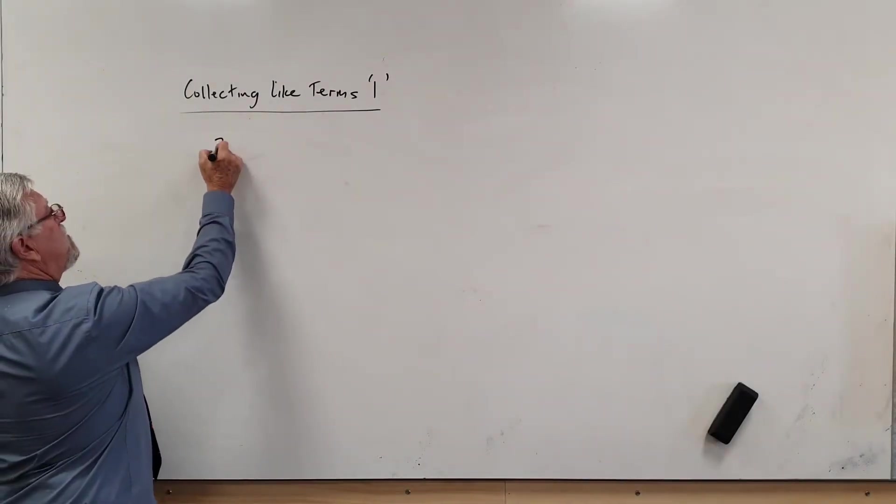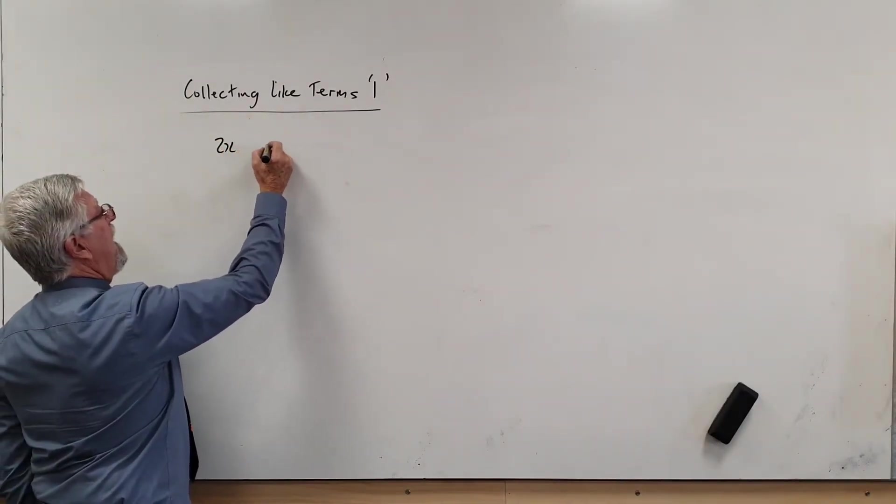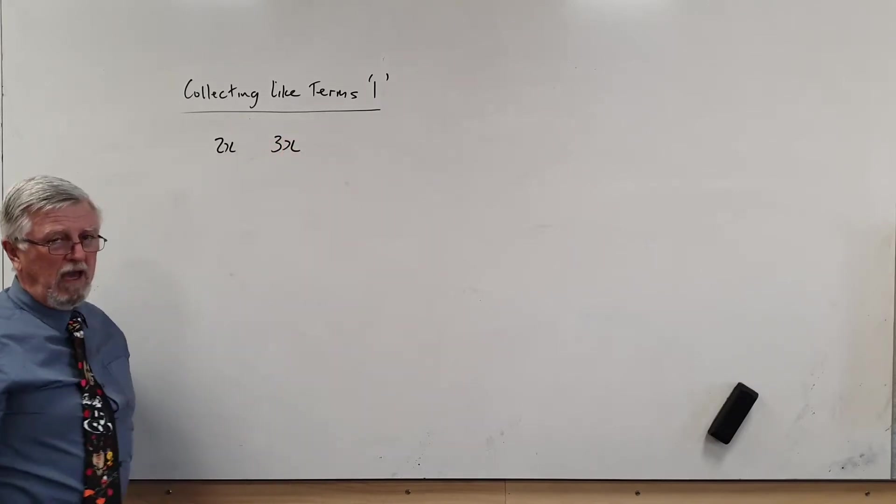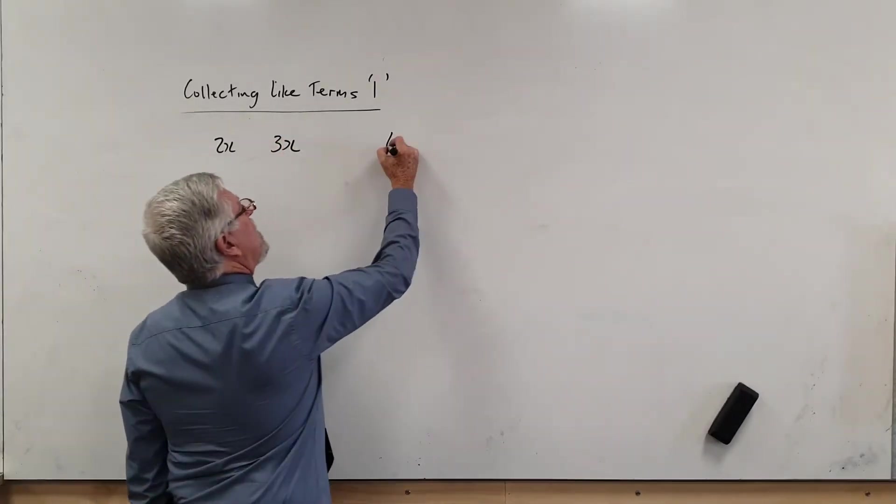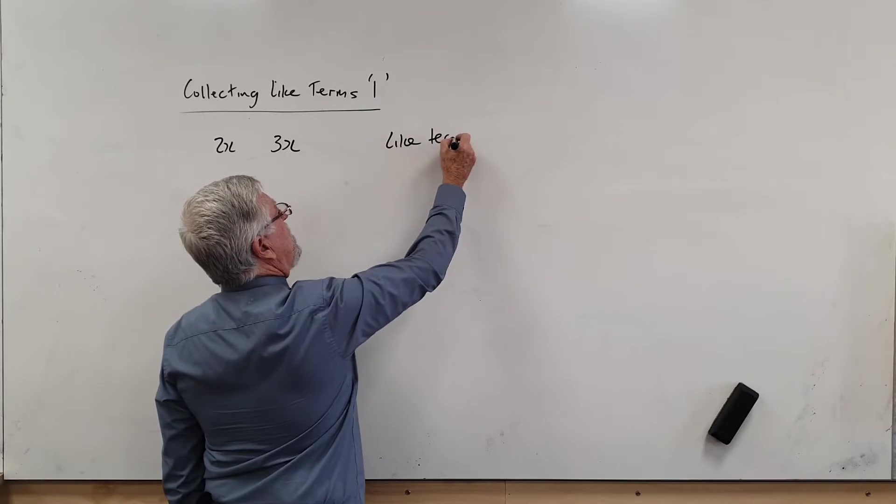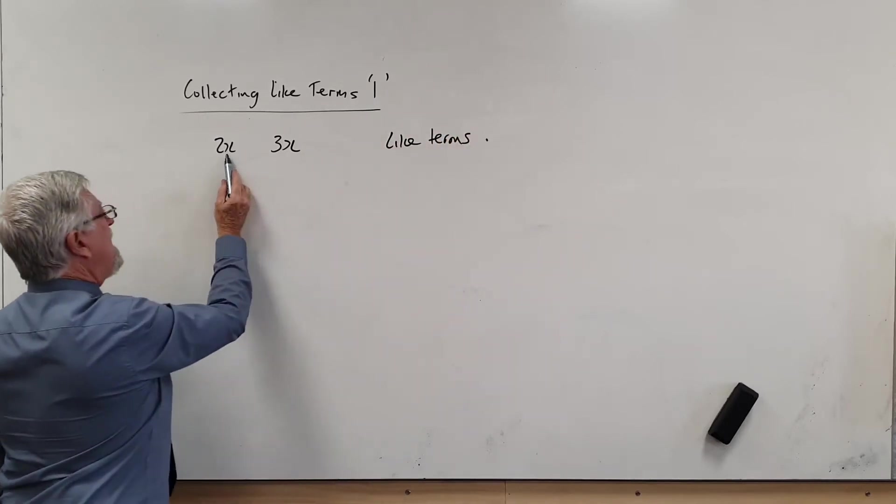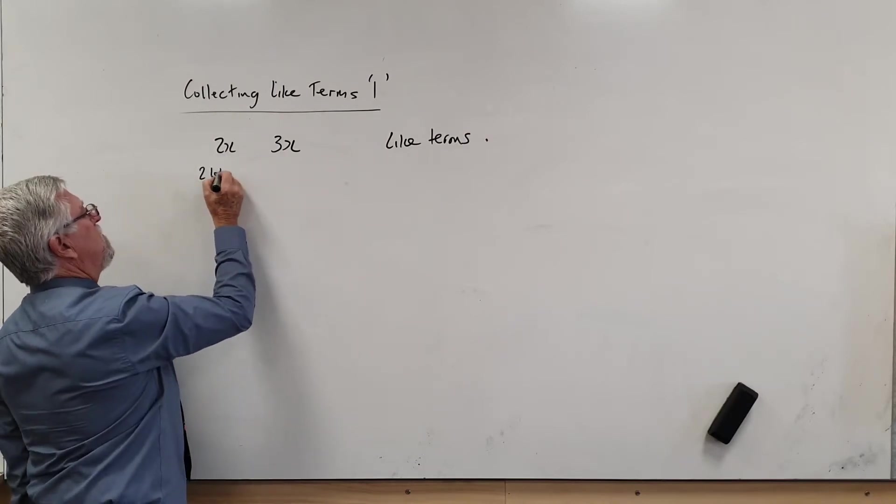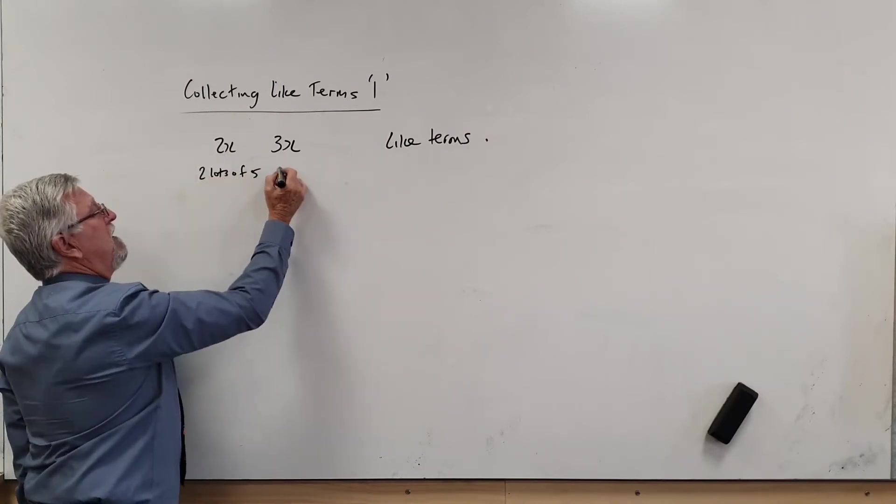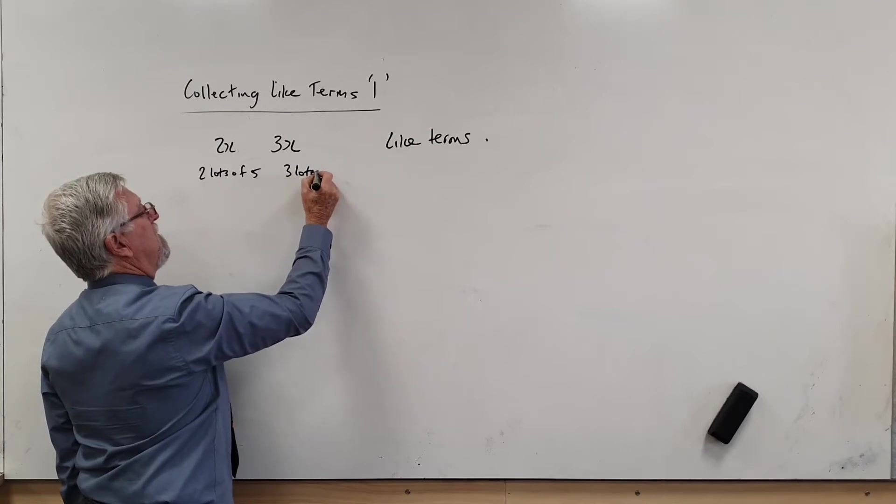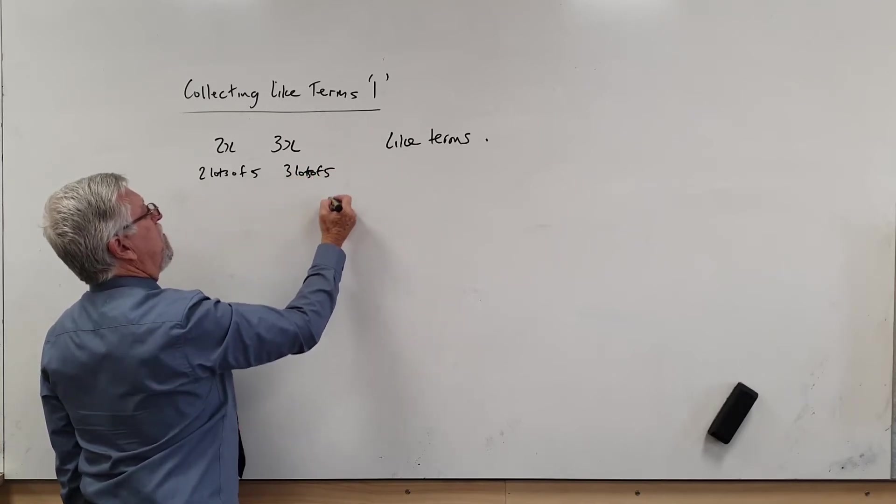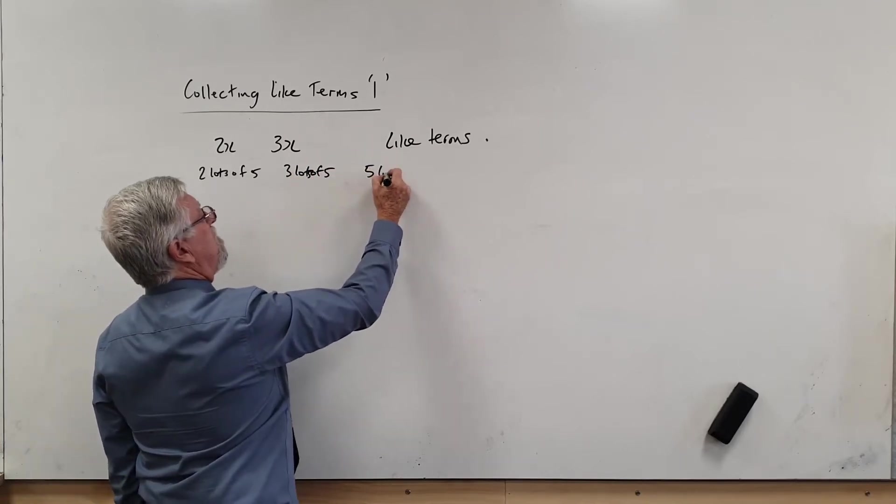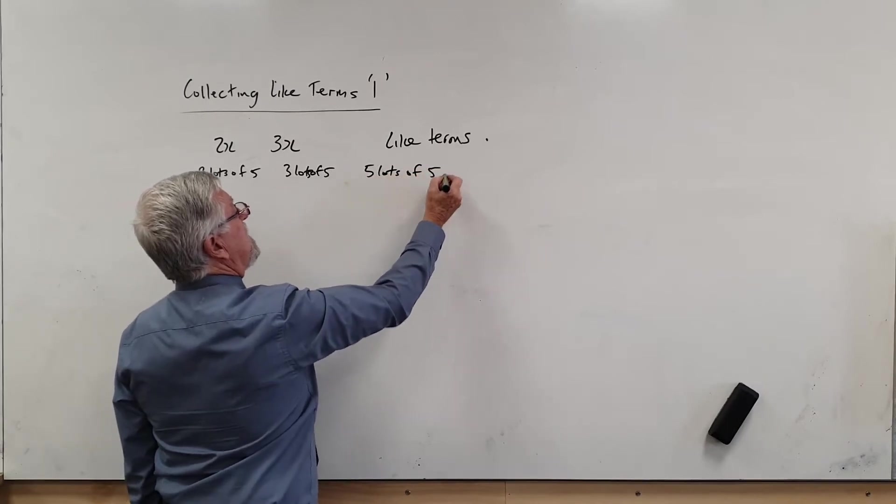If I had 2X and I had 3X, 2X and 3X are called like terms because if that X turned out to be five, this is two lots of five, and that's three lots of five. So all together we have five lots of five.